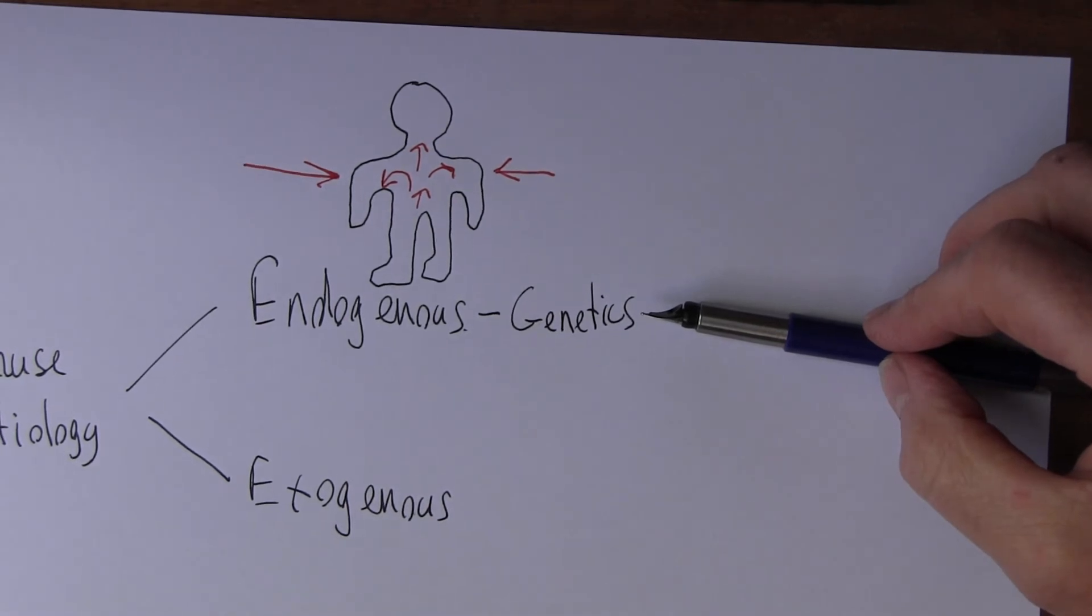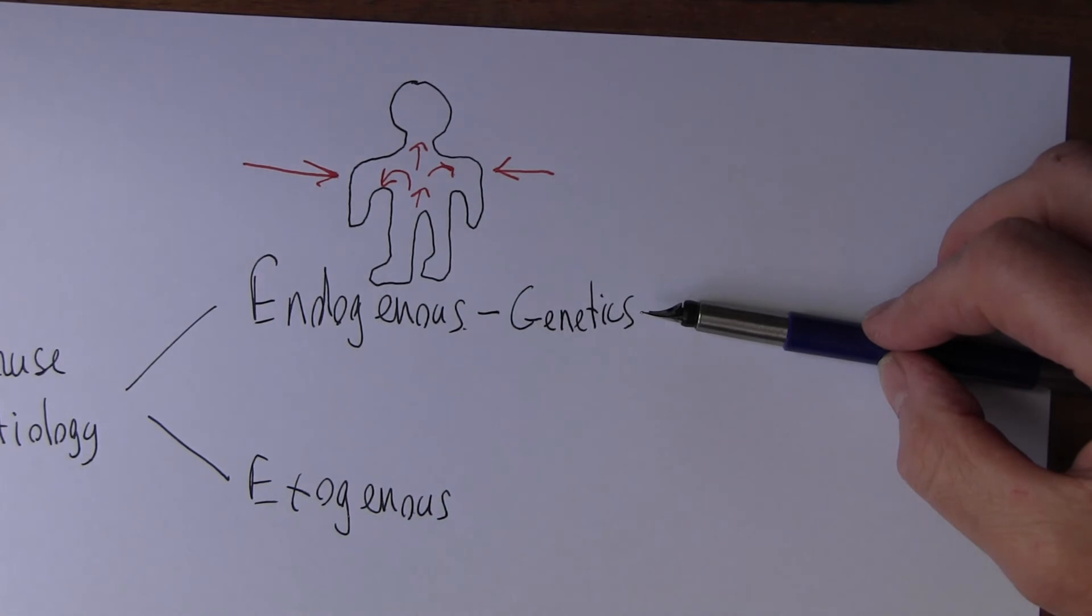DNA and the chromosomes. The set of instructions that determine the structure and therefore the physiology of the body. So we're talking about genetics.